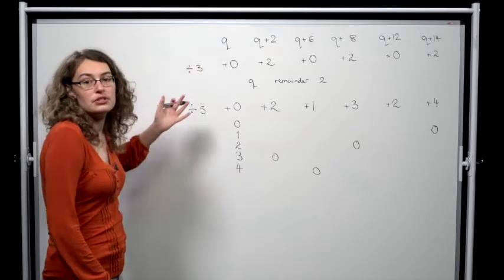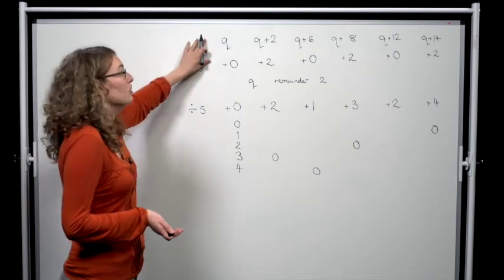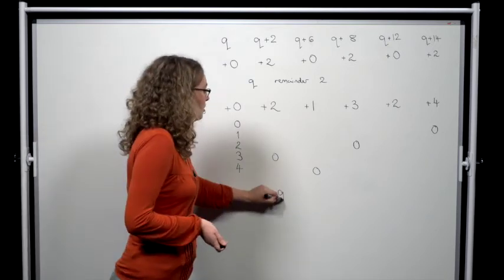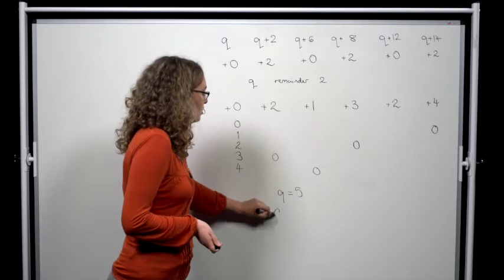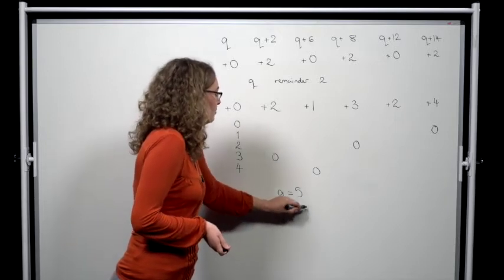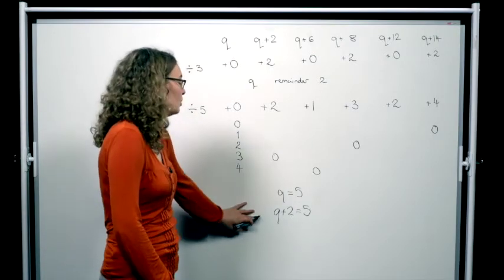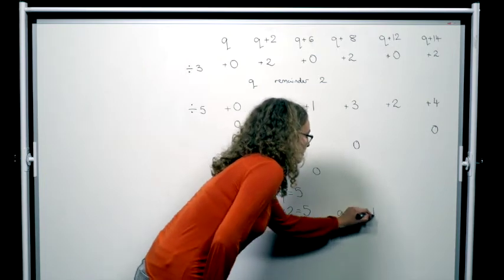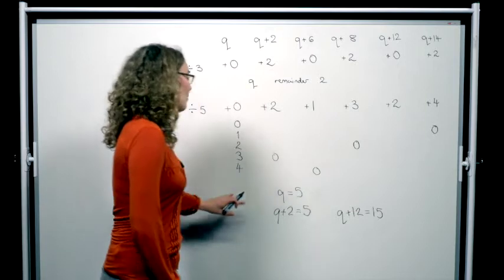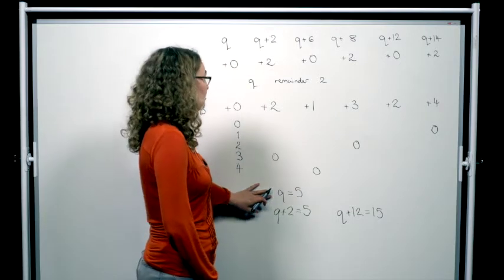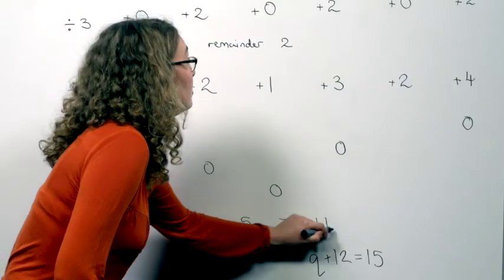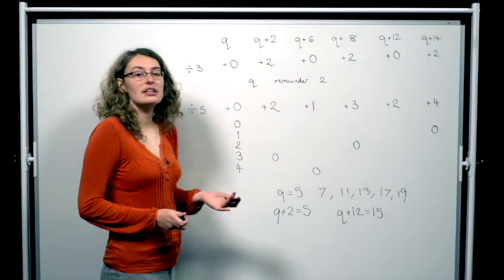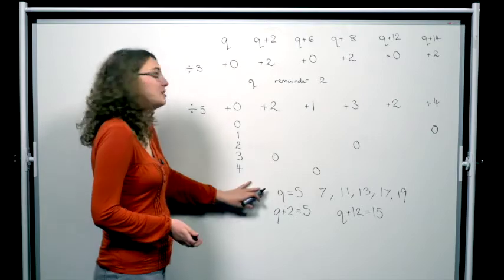Then, the only options for which of these can be 5 are q and q plus 2. q plus 6 is just too big. So, either q equals 5 or q plus 2 equals 5. But, if q plus 2 equals 5, then q plus 12 equals 15, which is not prime. However, if q equals 5, then we get 5, 7, 11, 13, 17, and 19, which are all prime. So, the only q which can work and which does work is q equals 5.